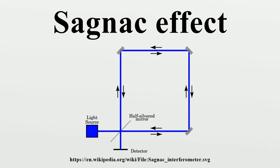We imagine a screen for viewing fringes placed at the light source. Given a steady light source, interference fringes will form on the screen with a fringe displacement proportional to the time differences required for the two counter-rotating beams to traverse the circuit. The phase shift causes fringes to shift in proportion, at non-relativistic speeds. The Sagnac effect is a simple consequence of the source independence of the speed of light. In other words, the Sagnac experiment does not distinguish between pre-relativistic physics and relativistic physics.